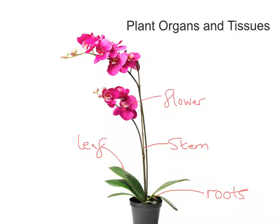So you just have to be aware, especially for this specification, of a few plant organs. The flower is classed as an organ system — you can name a few parts of the flower — along with the stem, the leaf, and the roots. Now I'm going to go a little bit deeper and look at the actual tissues that we find.